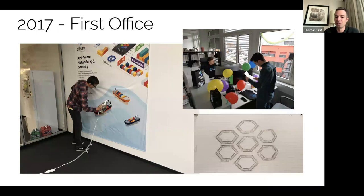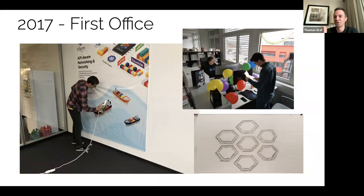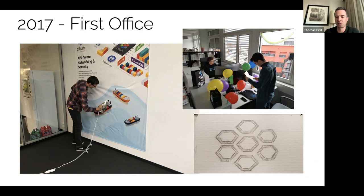This is also when we actually founded iSovalent, the company — about a year after creating Cilium. We got our first office. We also created the Cilium logo, because it was actually slightly different before — it was roundish. Some of you might remember the old Cilium logo. We redid it and used a more hexagon-type shape, which everybody recognizes as the Cilium logo today.